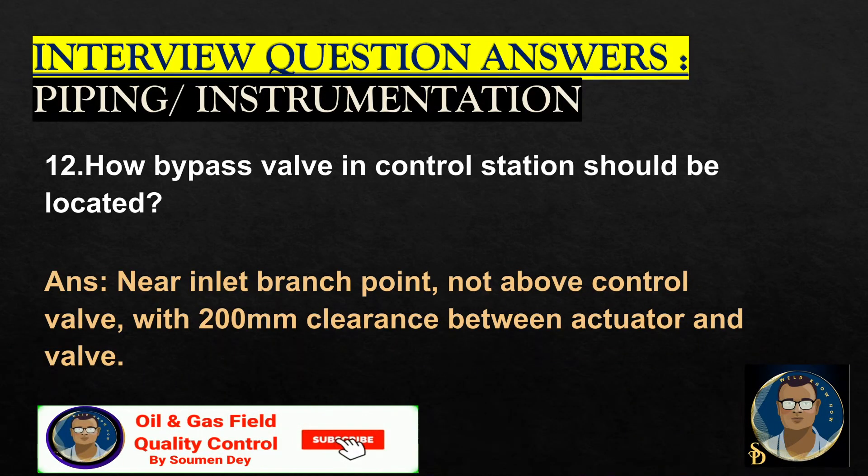How should a bypass valve in a control station be located? Near the inlet branch point, not above the control valve, with 200 millimeter clearance between the actuator and the valve.